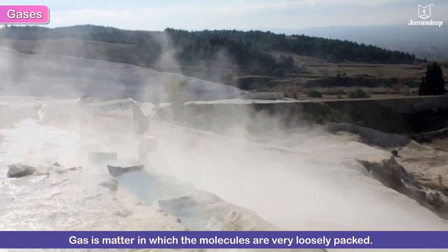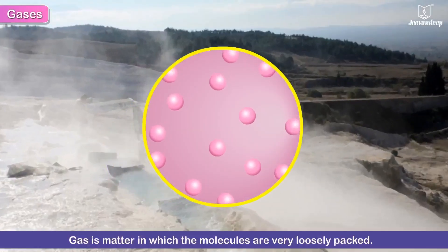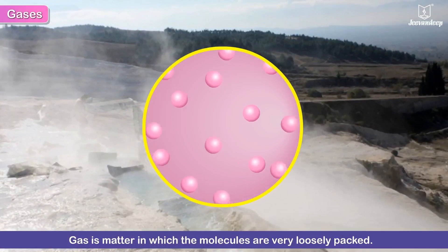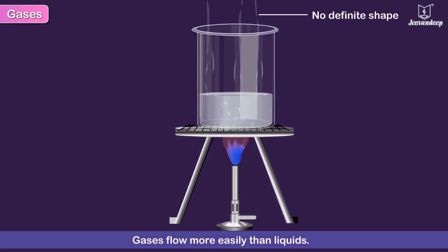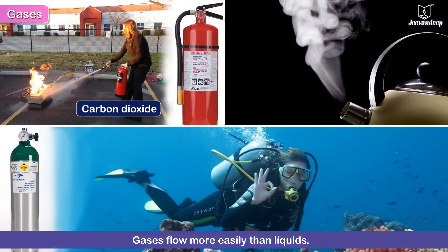Gas is matter in which the molecules are very loosely packed. That is why they do not have a definite shape and can flow even more easily than liquids. Carbon dioxide, oxygen, and water vapour are examples of gases.